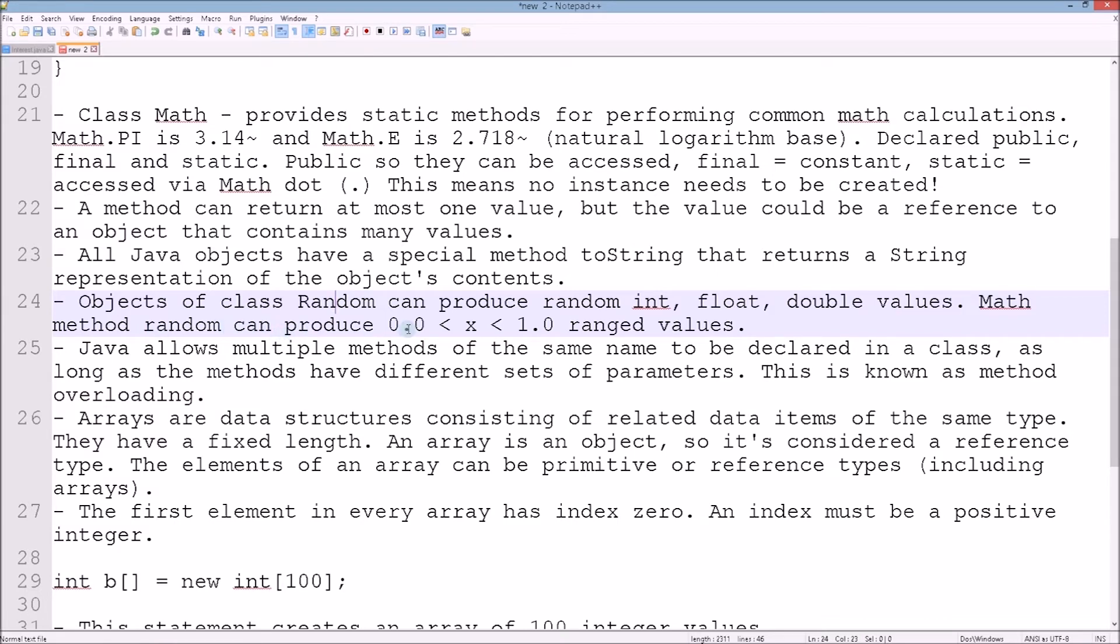Math method random can produce a random value in the range of 0.0 and 1.0. Java allows multiple methods of the same name to be declared in a class as long as the methods have different sets of parameters. This is known as method overloading.